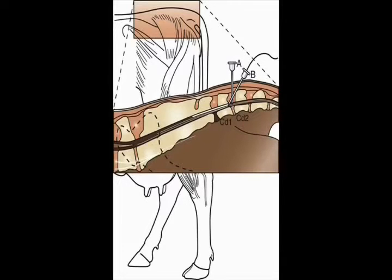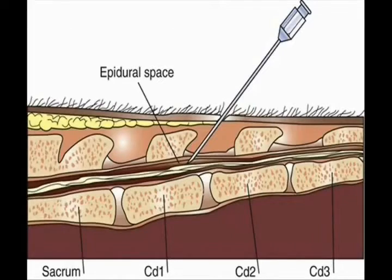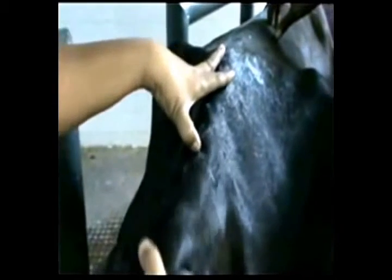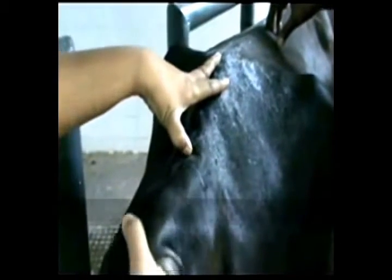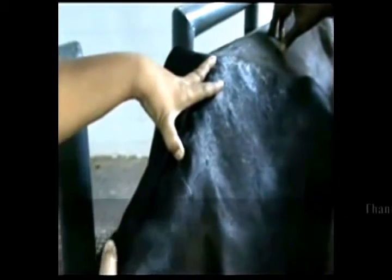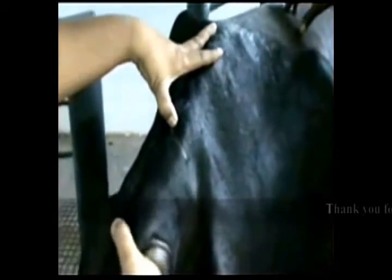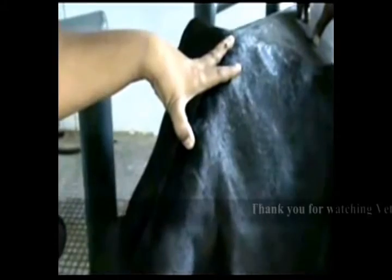Location of the epidural site: In cattle, epidural anaesthesia is administered at the sacro-coccygeal junction between the 1st and 2nd coccygeal vertebrae. The site for needle insertion is determined by elevating and lowering the tail in a pump-handle fashion and feeling where the vertebral joints are located by the depression and movement between the vertebrae. The joint between the 1st and 2nd coccygeal vertebrae is the most movable.